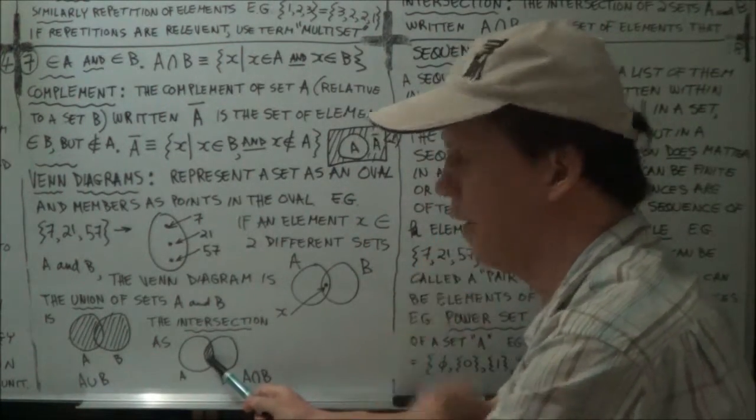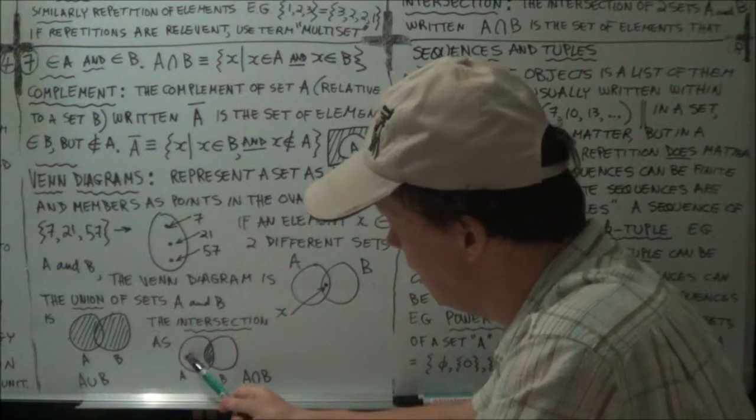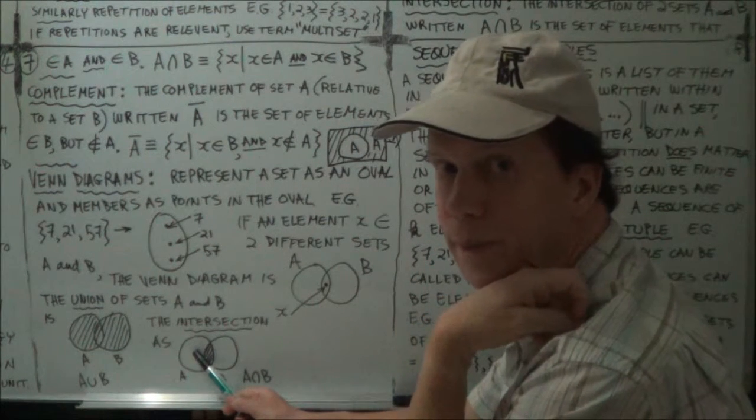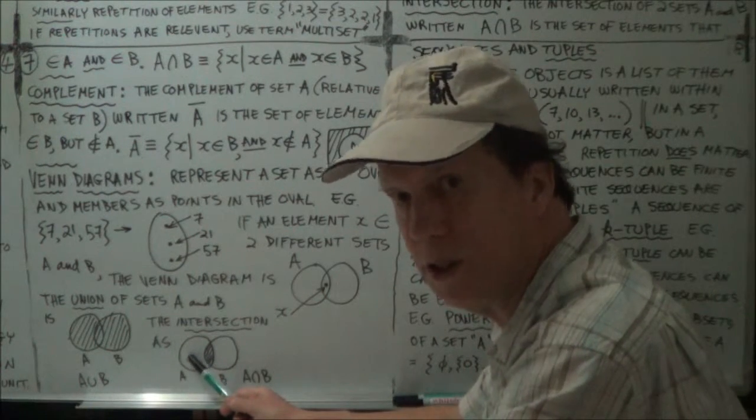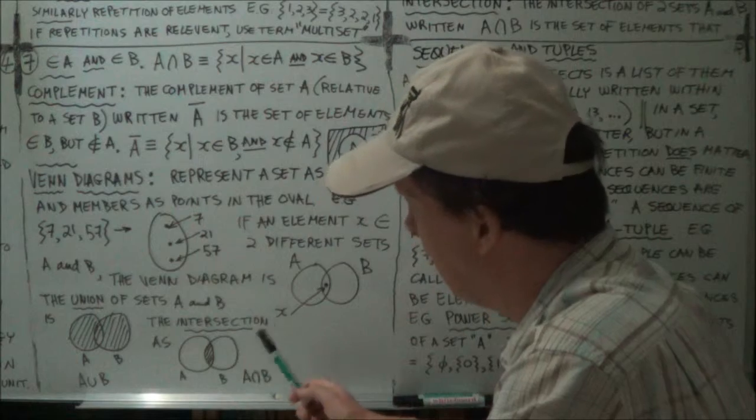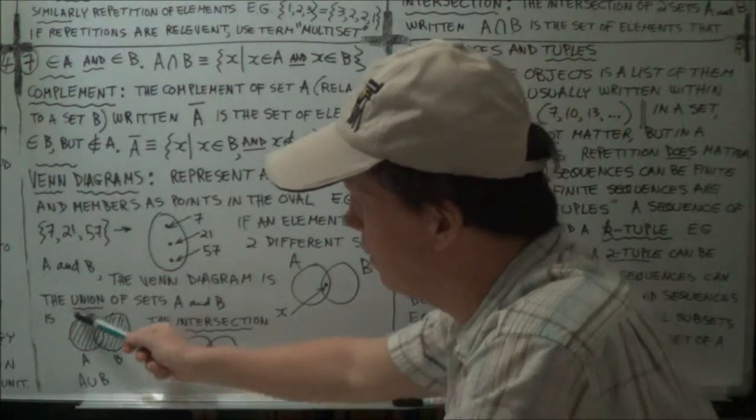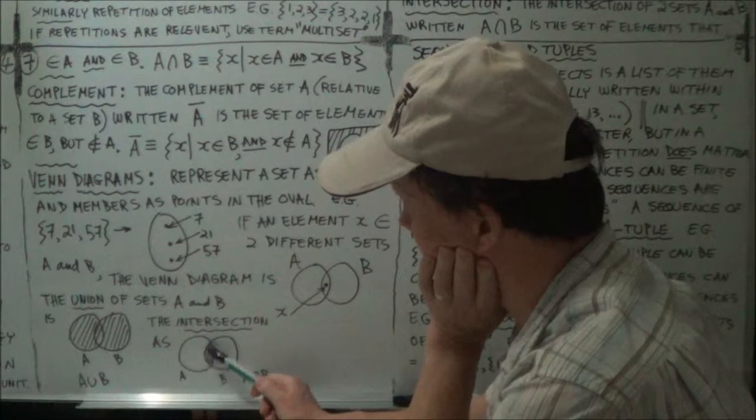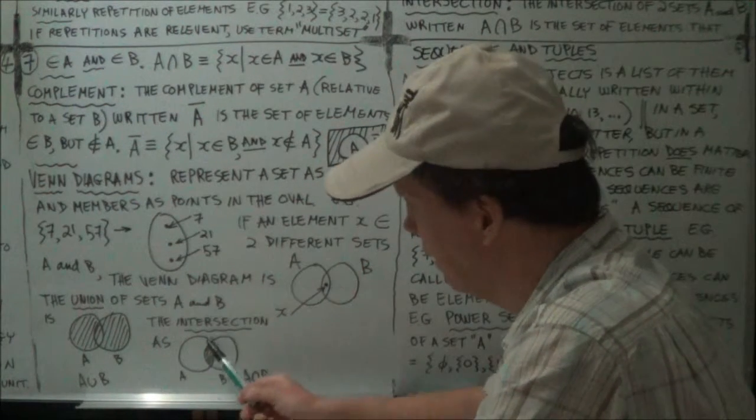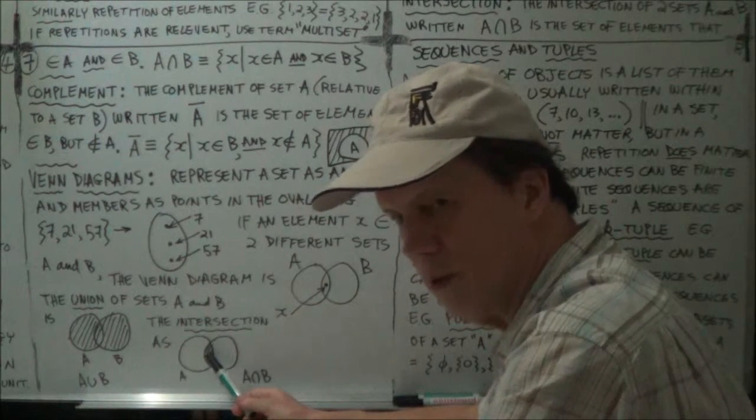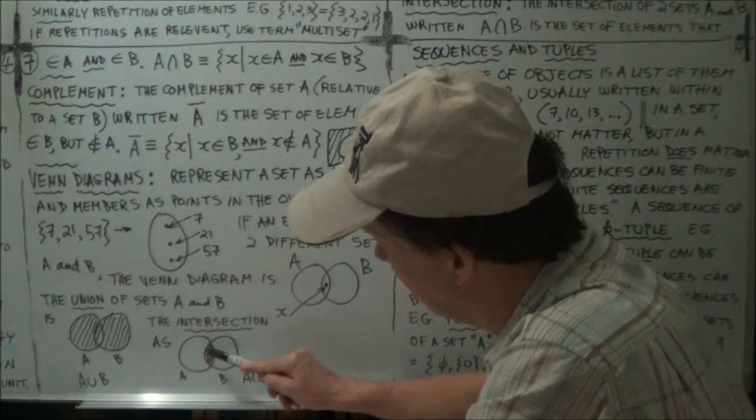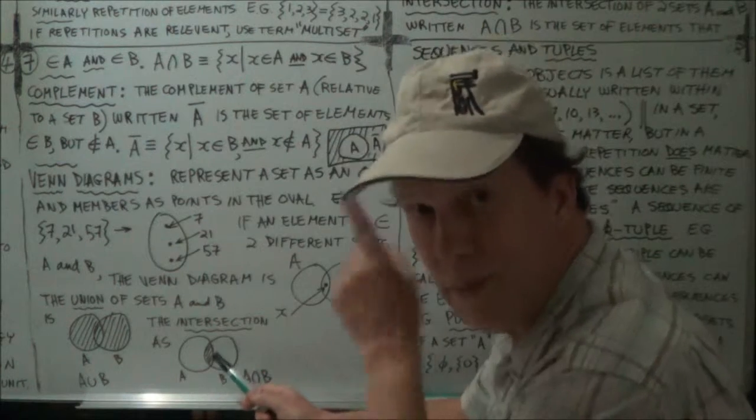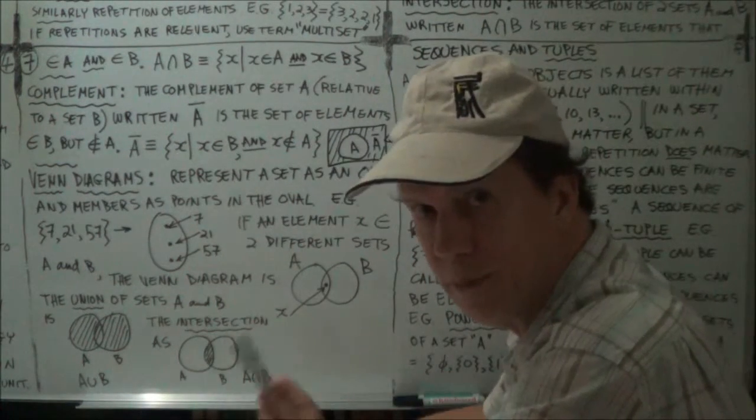Now, the intersection would be just this middle part only, because any dot that's in A, but not here, does not belong to B, and therefore does not belong to the intersection of A and B. So in Venn diagram terms, the union is represented this way, and the intersection is represented that way. These dashes here, these lines, they represent the points, the dots, in this area here, this middle area. In other words, they represent the points, the members, that belong to A and B, the intersection.